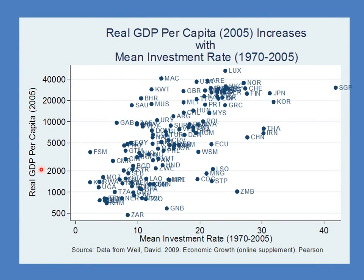What we're showing here is the relationship between real GDP per capita in 2005 — treated as the steady-state level — and the mean investment rate over the previous 35 years. Countries that invested more over those 35 years ended up with a higher level of GDP per capita, quite consistent with the Solow model. The data here is taken from David Weil's book, Economic Growth, which is very good.